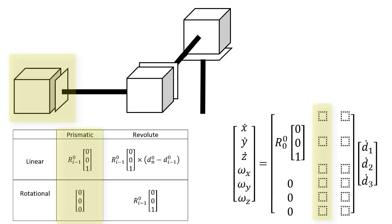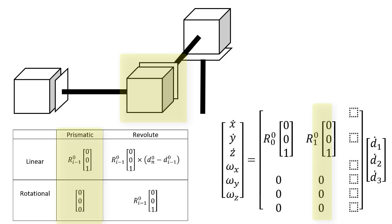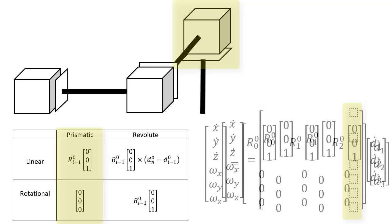The second column of the Jacobian matrix is for the second joint, so i equals two. We get the entries from the prismatic part of the table again, because this joint is also prismatic. Finally, we do the third column. The third joint is also prismatic, so i equals three, and we fill in the third column from the prismatic part of the table.